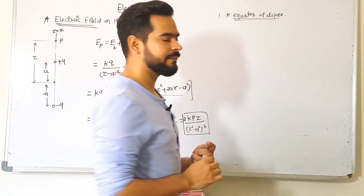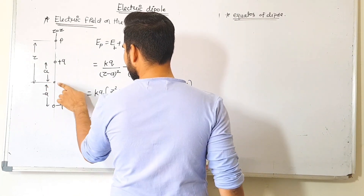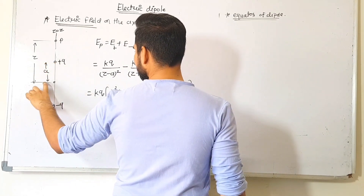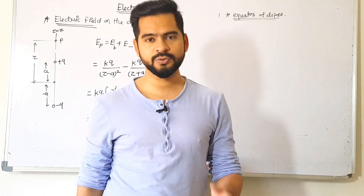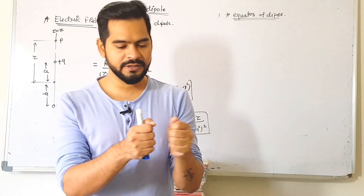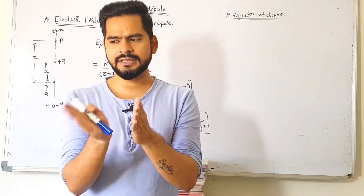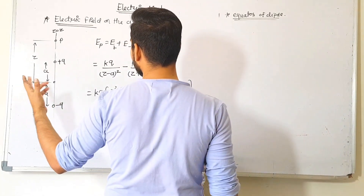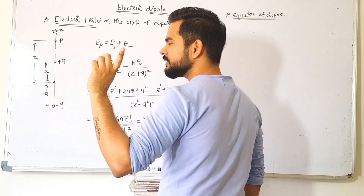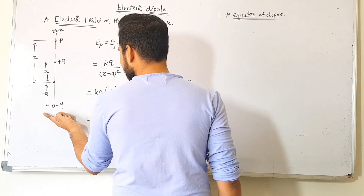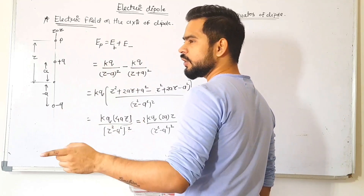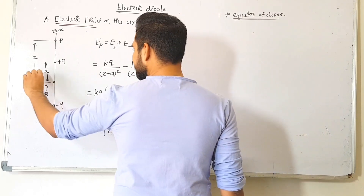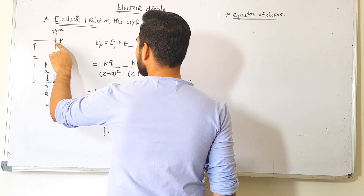You can consider your dipole on the x-axis or y-axis as well — the method stays the same. I strongly recommend you try it on x and y axes for practice. On the z-axis: positive charge is at +a, negative charge is at −a, with origin at center. So the total length of the dipole L equals 2a. Point P is on the z-axis at distance z from the origin.